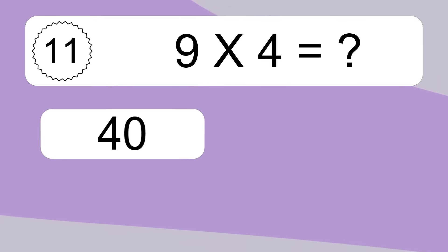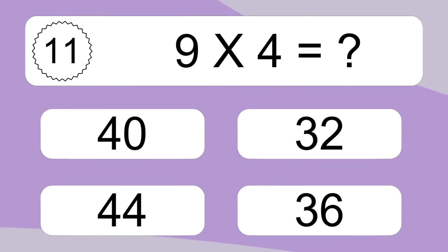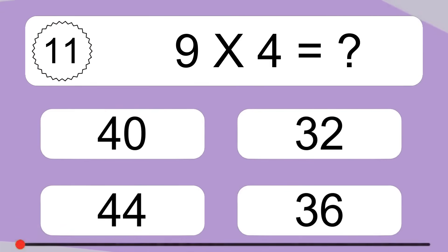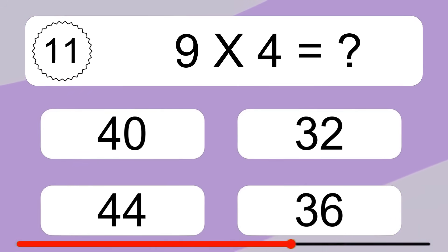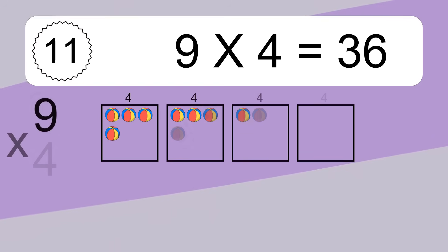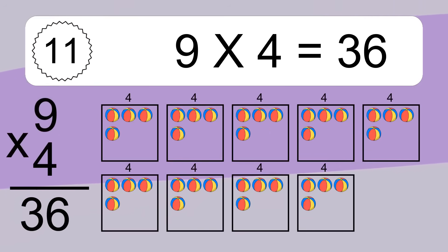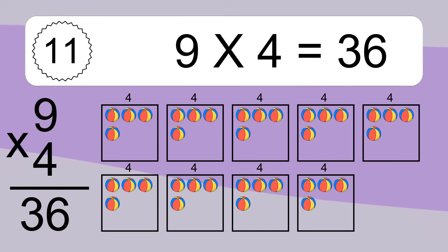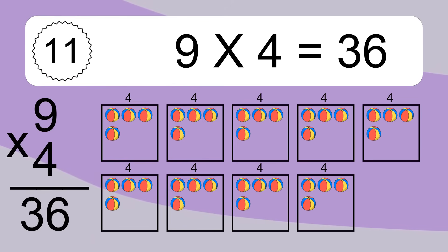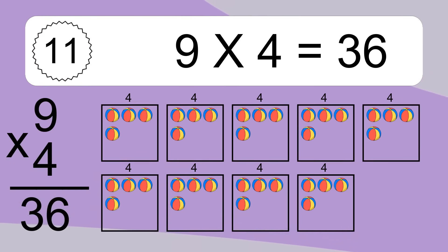9 times 4 equals what? We have 9 boxes and each box has 4 colorful balls inside. If you count all the balls in all the boxes together, you will have 9 times 4 balls. This equals 36 balls.